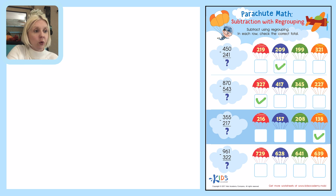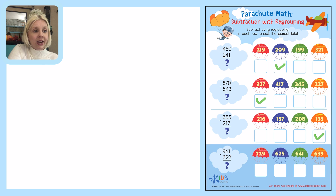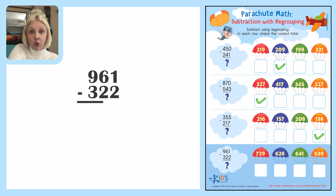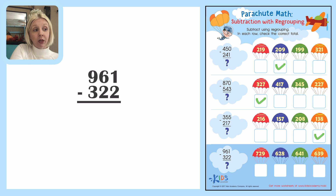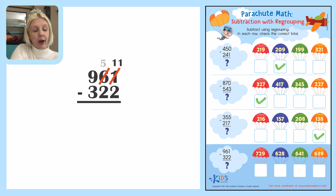Nice job — we've got one more! The last one is 961 minus 322. One is smaller than two, so here I'm going to need to regroup or borrow. I'm going to add ten to it, so I cross that out and turn it into eleven. The only way I can do that is by taking from the six and turning it into a five — it has to be one less since I take away there.